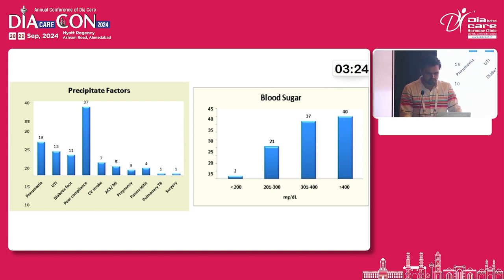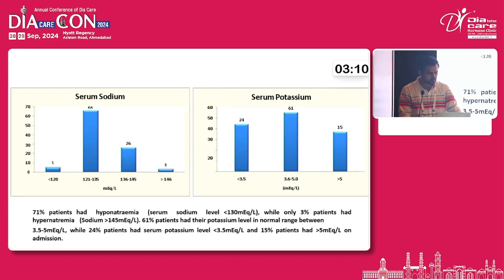Among blood sugar levels, 40 patients had more than 400 mg/dL, followed by those in the 300–400 mg/dL range, and then less than 300 mg/dL. Regarding serum sodium, 71% of patients had hyponatremia with levels less than 130 mEq/L, while only 3% had hypernatremia. For potassium, 61% of patients had levels in the normal range of 3.5–5.5 mEq/L, 24% had levels less than 3.5 mEq/L, and 15% had more than 5 mEq/L on admission.